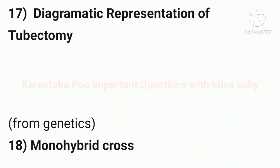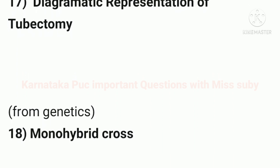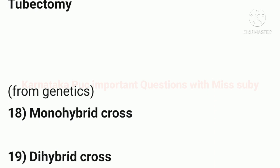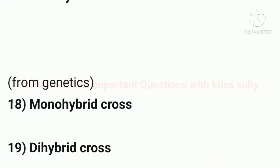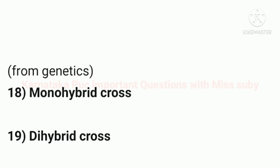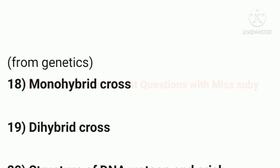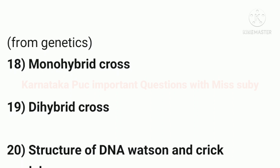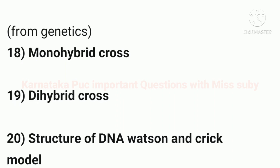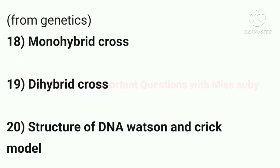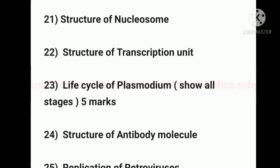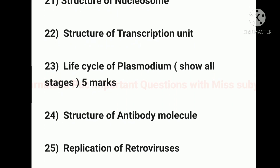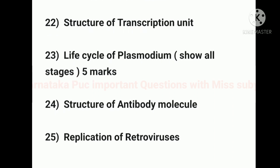Monohybrid cross is important. Next, diagram for dihybrid cross — either one will be asked. Next, structure of DNA — the Watson and Crick model — is a very important diagram. Next, structure of nucleosome. Next, structure of transcription unit.